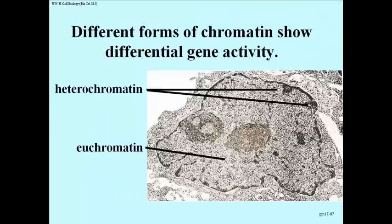Now let's take a look at the different forms of chromatin that you can see in a nucleus. The darker granulated material in a nucleus is referred to as heterochromatin, and the lighter granular material inside a nucleus is euchromatin. There are two grayish areas in this particular nucleus, in this cross-section, and those are the nucleoli.